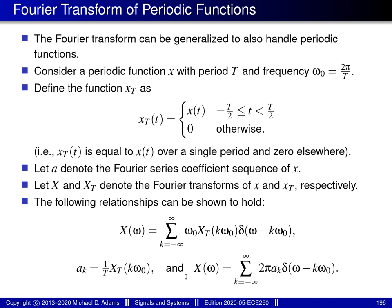The second of the three equations gives us a formula for computing the Fourier series coefficient sequence a for the periodic function little x. In particular, this Fourier series coefficient sequence is obtained by sampling the function big X subscript capital T at points evenly spaced by omega naught, then dividing by capital T. This provides a means to compute Fourier series coefficients using the Fourier transform instead of the Fourier series analysis equation.